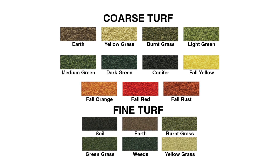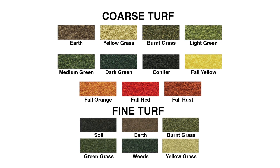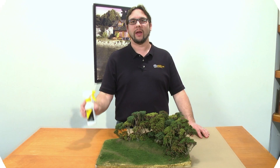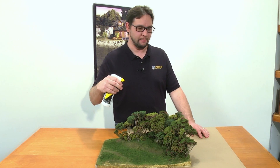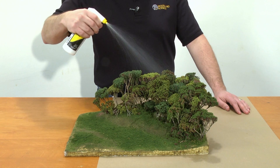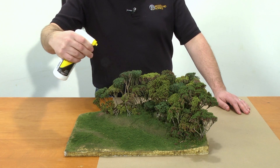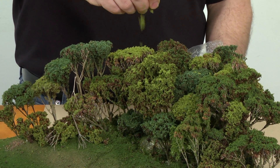You can use additional colors of coarse turf and fine turf to create highlights and contrast. Use a scenic sprayer to mist some scenic cement over your finished forest canopy, and then sprinkle some fine or coarse turf as desired.